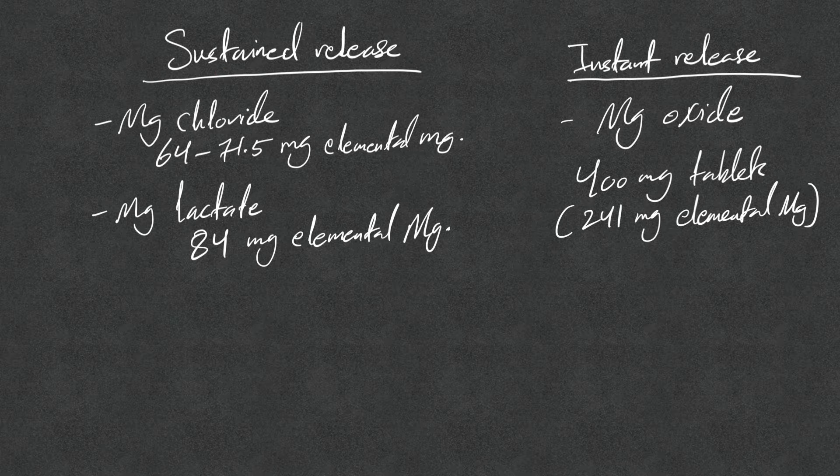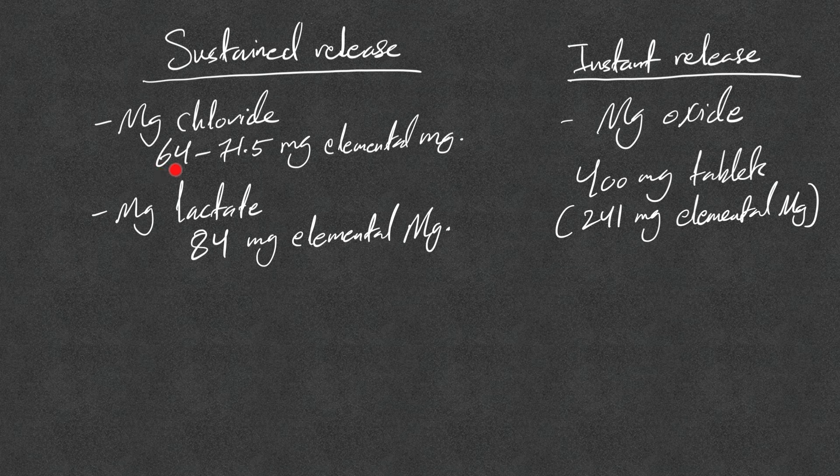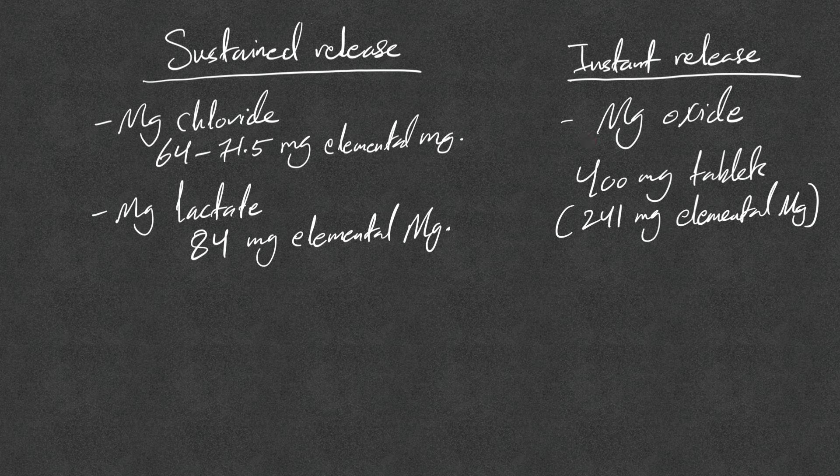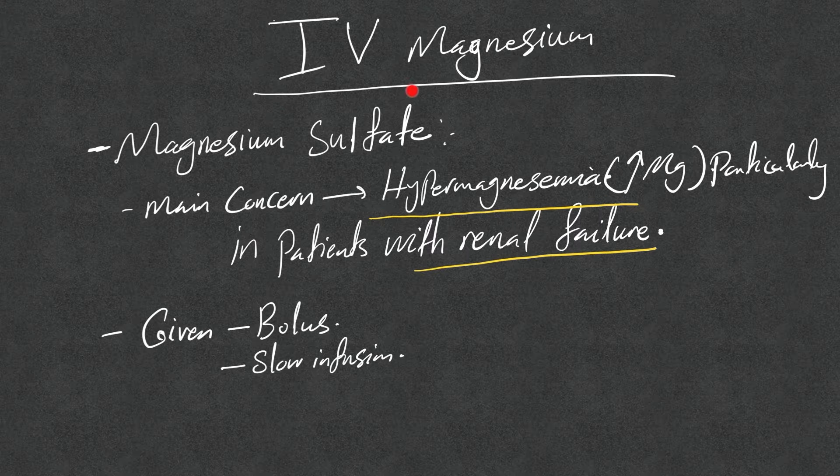The available sustained release options we have are magnesium chloride, which has 64 to 71.5 milligrams of elemental magnesium, and magnesium lactate, which contains 84 milligrams of elemental magnesium. Instant release is the famous magnesium oxide. They come in 400 milligram tablets and have 241 milligrams elemental magnesium. And of course, IV magnesium.